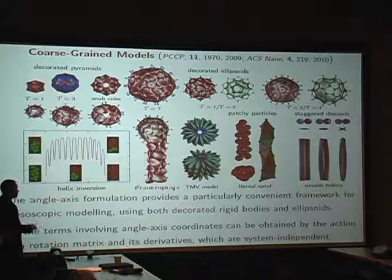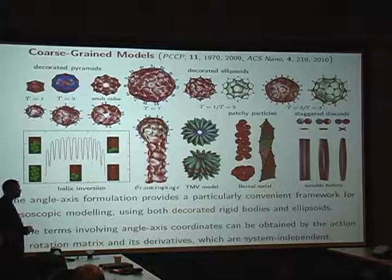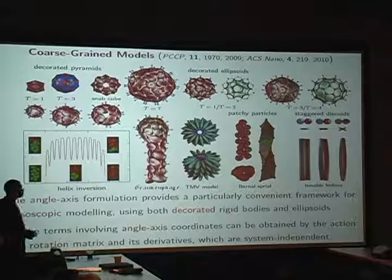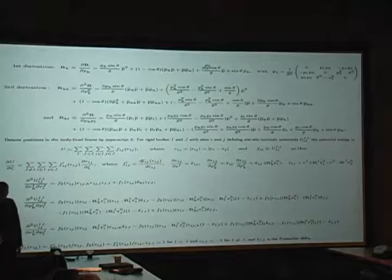They're fixed, and then to develop a new potential, all you need is site-site interactions between the rigid bodies, and the representation is very compact. In fact, I can put all the first and second derivatives on a single slide. There it is. Now that you've absorbed that, here are some results. So, icosahedral shells. These are decorated pentagonal pyramids with some interaction sites on them.